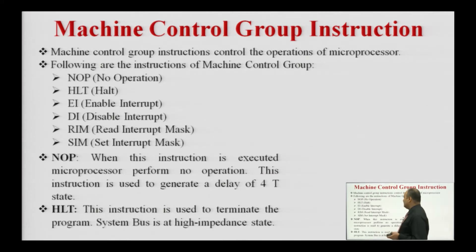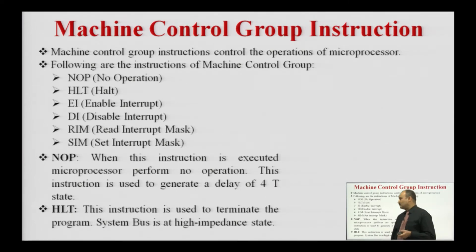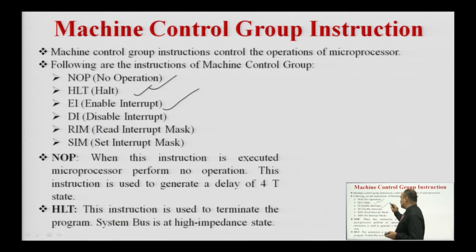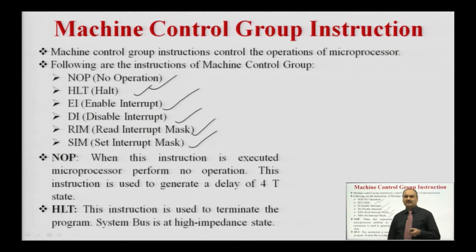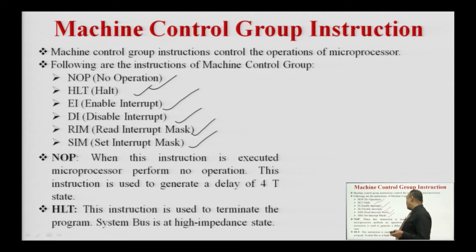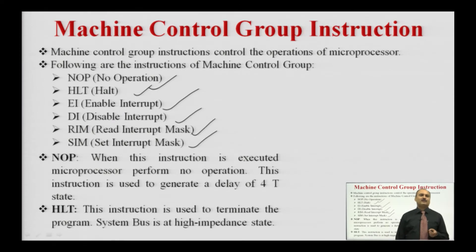Next is the machine control group instruction. Machine control group instructions control the operation of the microprocessor — that is why they are called machine control group instructions. In the 8085 microprocessor, we have: NOP (no operation), HLT (halt instruction), EI (enable interrupt), DI (disable interrupt), RIM (read interrupt mask), and SIM (set interrupt mask). The first instruction is NOP — whenever the microprocessor executes this instruction, it performs no operation.